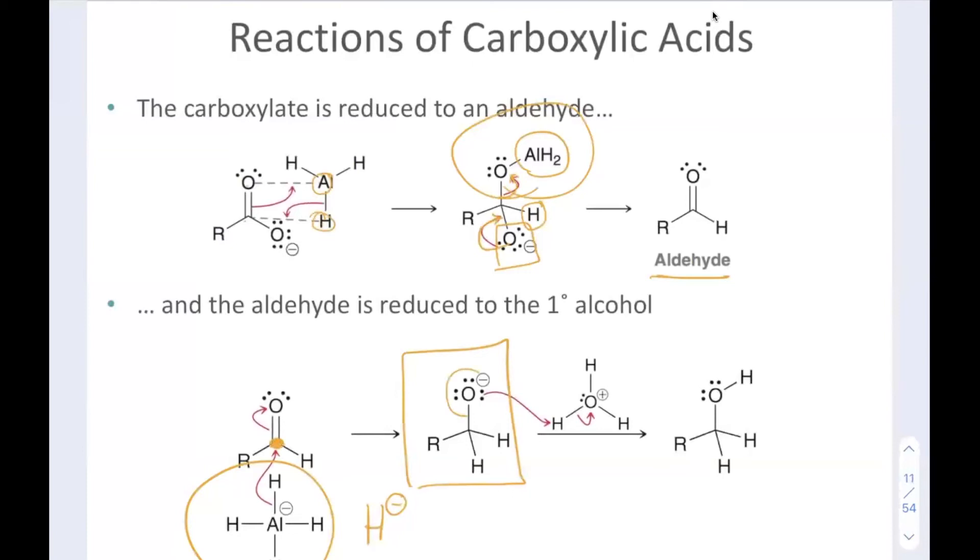In the last step, the negatively charged oxygen of the alkoxide gets protonated by acid and we have our primary alcohol.